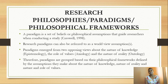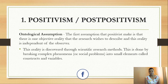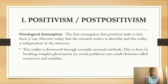We started by defining beliefs and assumptions, noting they come from the three different assumptions that philosophers hold. Now we move to look at the four main philosophies applicable in social science research. The first one is positivism, or post-positivism.